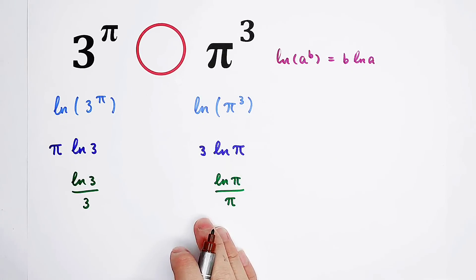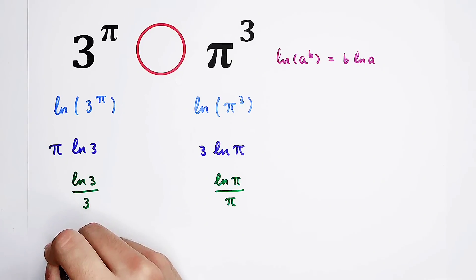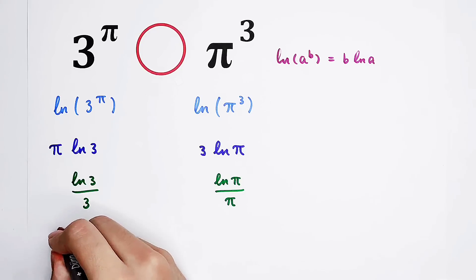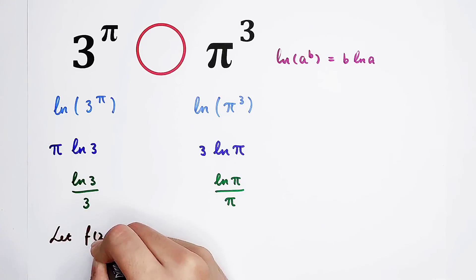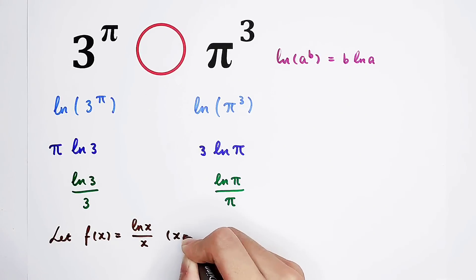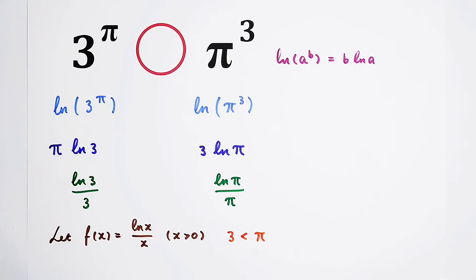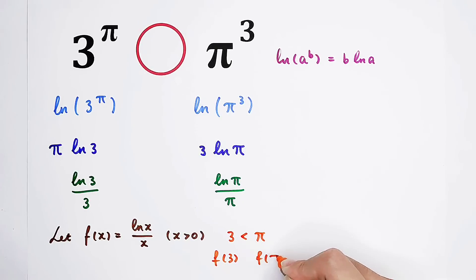Now you can see both sides have the same form: the natural log of something over something. So we can construct a function f(x) equals the natural log of x over x, where x must be positive. We know that 3 is less than pi, and we want to compare f(3) with f(pi). We have to find out whether f(3) is also less than f(pi).